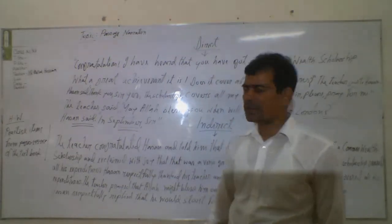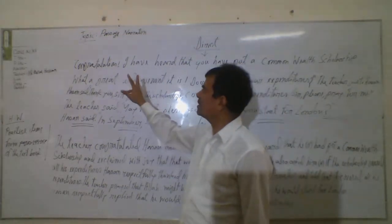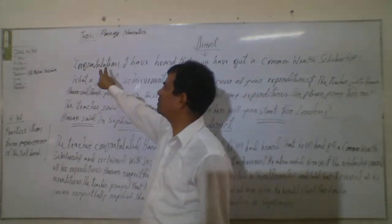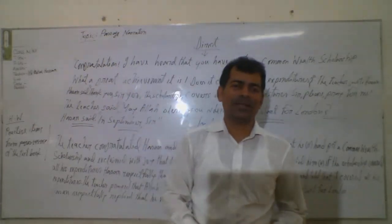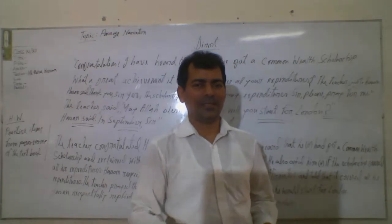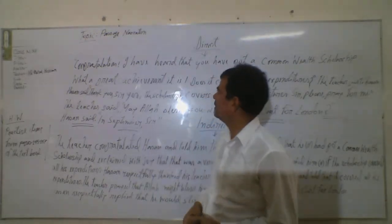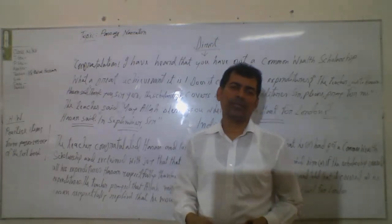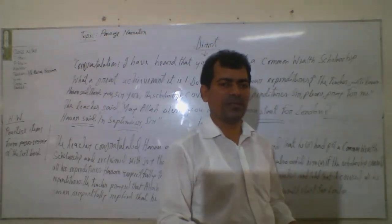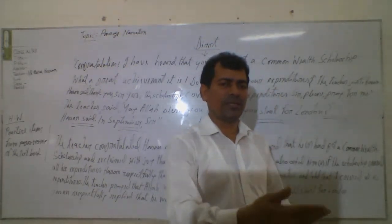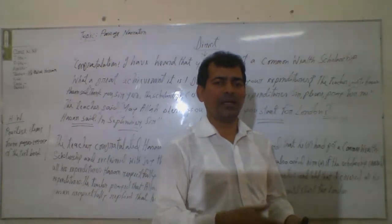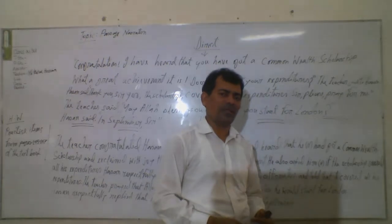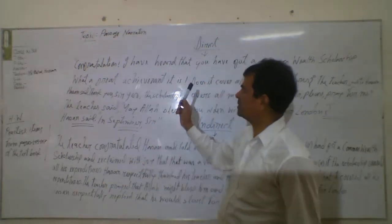According to the rules of Passage Narration, we know that if there is a single word or phrase within inverted commas, we need to make it a full sentence in indirect narration. So when a speaker speaks two or three sentences together, we need to write, after writing the first sentence, then from the second sentence we need to write 'added that', 'also said that', 'further said that' in indirect narration.